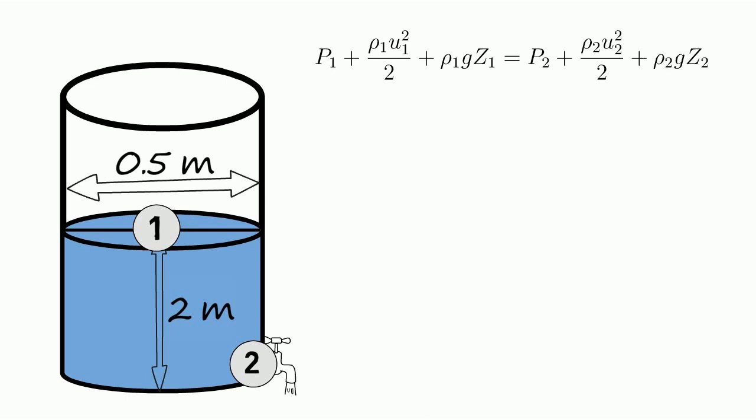At both points, pressure is from the atmosphere only so we can cancel out the static pressure on both sides. At point 1, fluid is stationary and we can say the velocity at point 1 is 0.